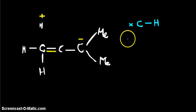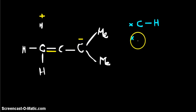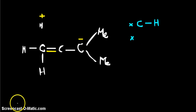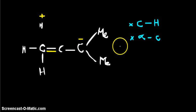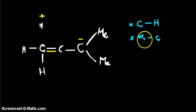The next part is: this basically takes place only through the alpha carbon — the carbon adjacent to the carbon which undergoes hyperconjugation. So these two are the most important things that you need to remember.